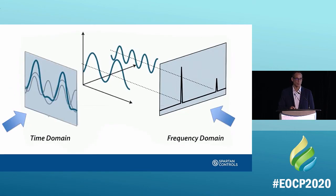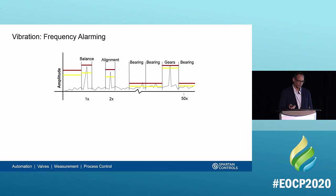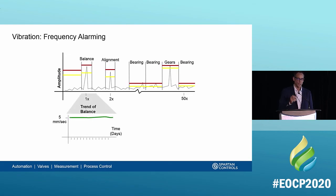To break out the individual frequency components, we do a Fast Fourier Transform (FFT) on the time-based waveform. This mathematical algorithm converts the time-based waveform into a frequency spectrum — a series of frequency signals each with a separate amplitude. We can then isolate the amplitude of the frequency associated with each mechanical part in the device. For example, balance issues occur at one times turning speed; alignment issues may appear at two times turning speed; bearings and gears occur at different characteristic frequencies. We can then trend each of those frequencies over time and see if they exceed an alarm point — for instance, at 50 times turning speed for certain bearings, an amplitude above the alarm threshold indicates a bearing problem.